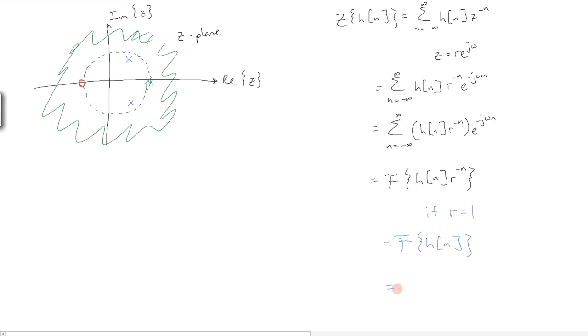So this can furthermore be written as h of z evaluated as z equals e to the j omega, since we set r equal to 1 and z is equal to r e to the j omega.